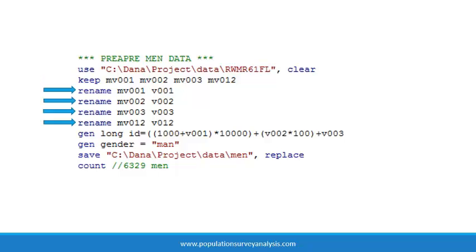Second, we ensure that we have the same variables in both datasets and that the variables share a common variable name. We use the rename statement to change the variable names in the male recode file, which start with MV, to start with V, like the women's file.